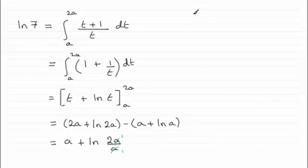So if we just come down here, now we can finish this off. We've therefore got the natural log of 7 here on the left hand side, equals a plus the natural log of 2.